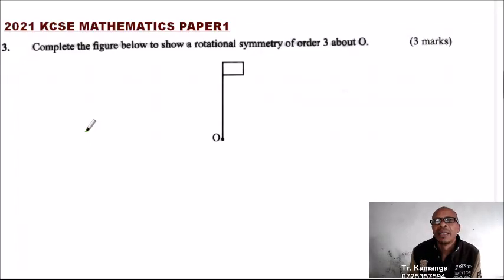This is question number three. Complete the figure below to show a rotational symmetry of order three about O. We have a diagram here that looks like a flag.